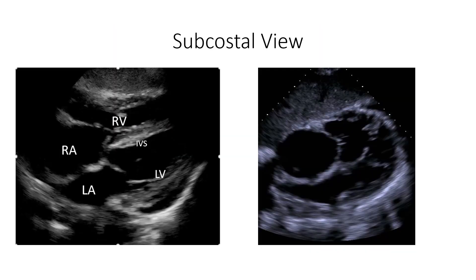Lastly, we are going to look at the subcostal view. In this view you can see the right atrium, right ventricle, left atrium, left ventricle, and the interventricular septum. This view allows us to measure the degree of right ventricular dysfunction and thickness of the right ventricular wall, abnormal being more than 5 millimeters. It provides the best measure of inferior right ventricular wall thickness. The inferior vena cava is also measured here at rest and during inspiration to estimate the right atrial pressures.